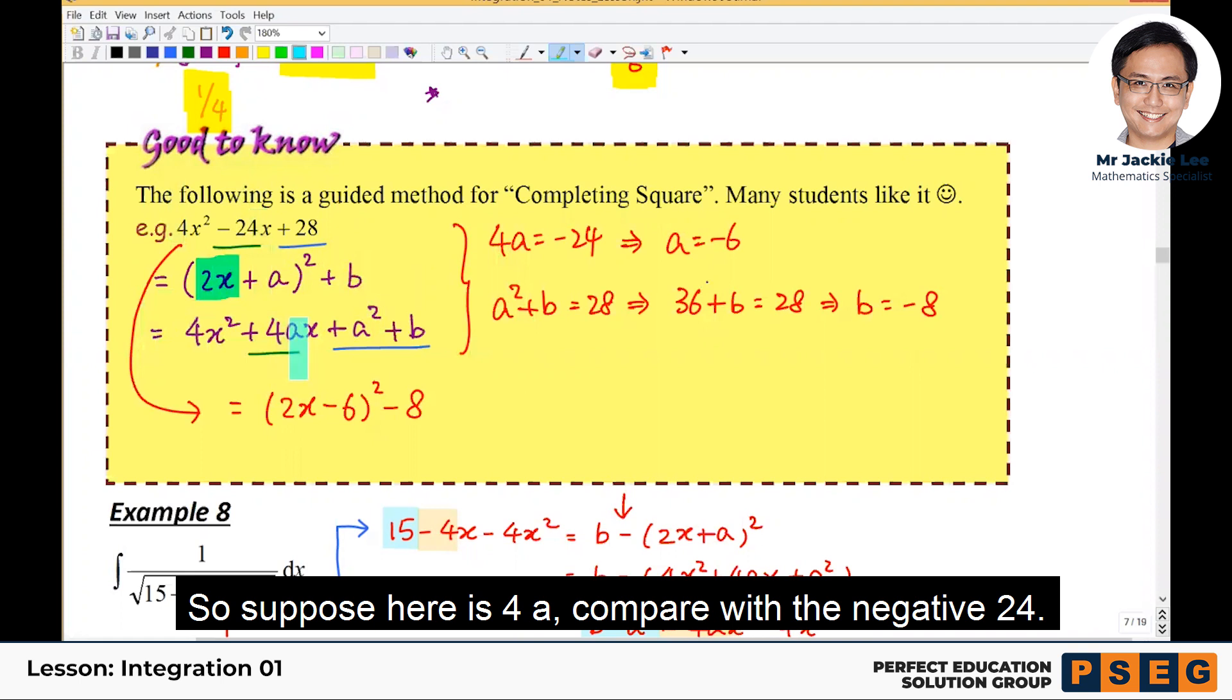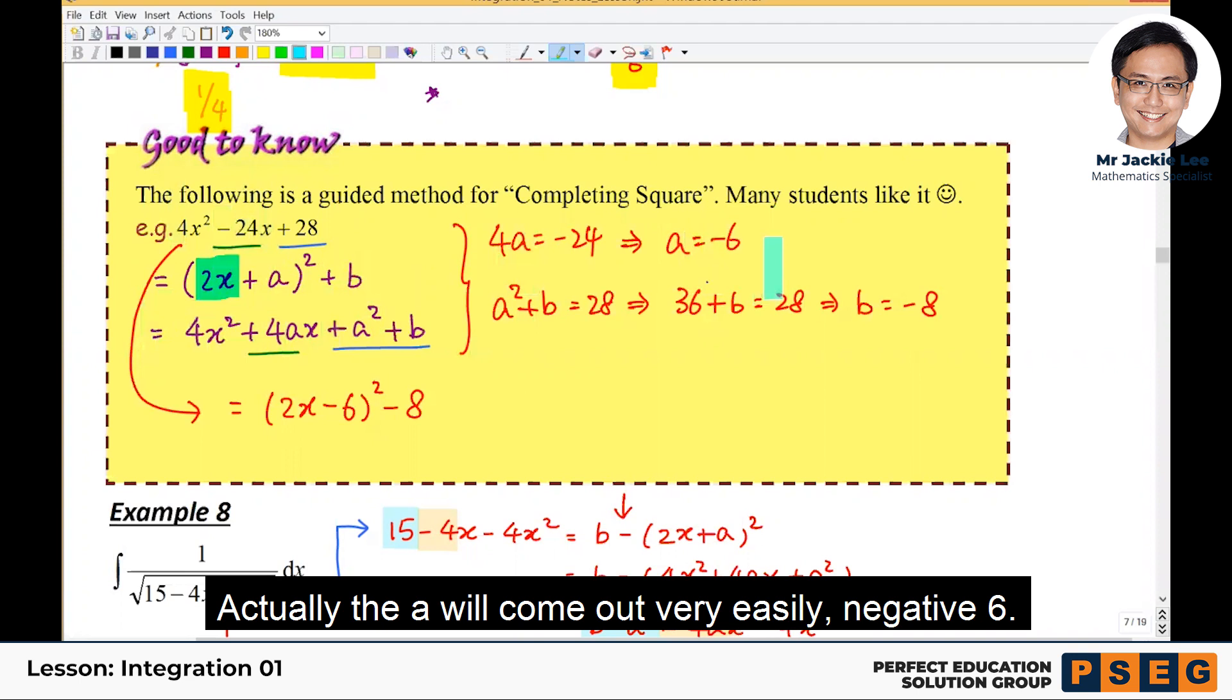So suppose here is 4a compare with the negative 24. You see the a comes out very easily: negative 6.